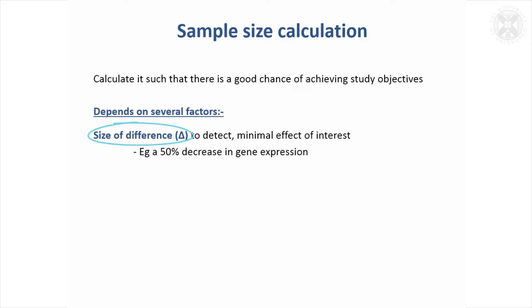It's what size of difference would be important if it occurred. For example, a 50% decrease in gene expression - if that was the true underlying effect, would you want your study to be able to show that? If it was only 20%, would it be important for your study to show that? So that's something you need to decide in advance. If the difference was there, would I want to be able to detect it in the study? You just need to know what you would like to see if it was there.